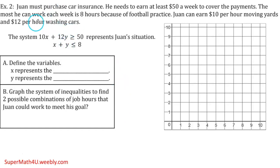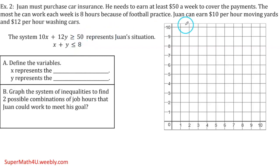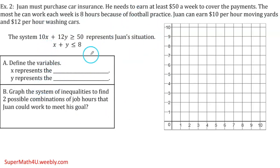Let's read it. One must purchase car insurance. He needs to earn at least $50 a week to cover the payments. The most he can work each week is 8 hours because of football practice — so this is hours. He can earn $10 per hour mowing yards and $12 per hour washing cars. All this information is from a website from the EOC — this is as close as you can get to the actual exam.